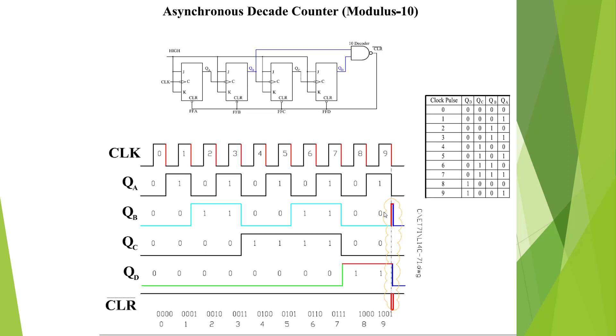So we're going to have 1, 0, 0, 1, which is a 9. So it's going to reset at 9 and count from 0 to 9.